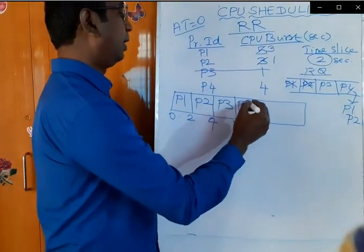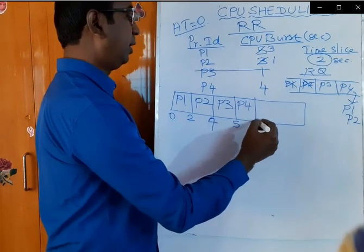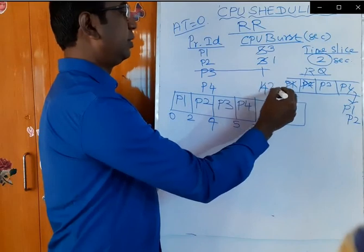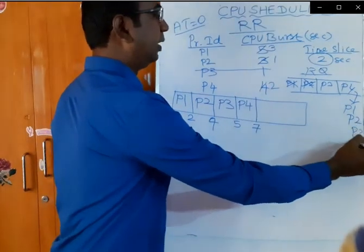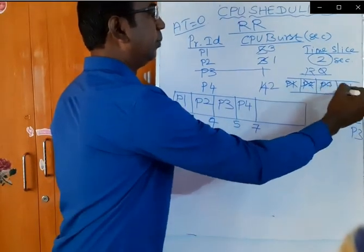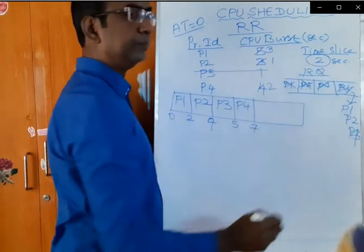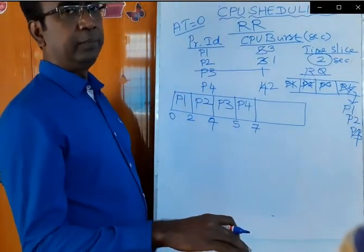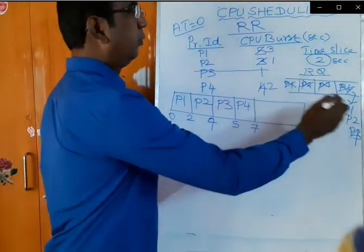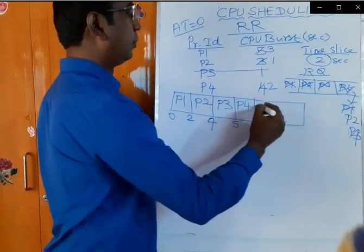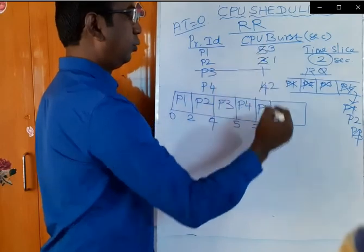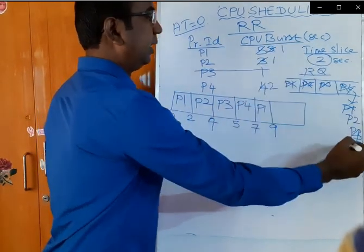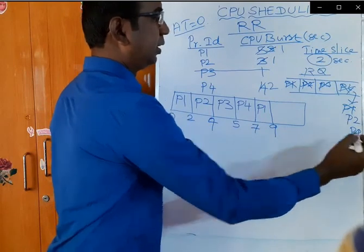Now P4 will enter into the CPU and execute for 2 seconds, reaching the 7th second. The remaining time for P4 is 2 seconds, so P4 will go to the end of the queue. Now the chance is given to P1 again. P1 will enter into the CPU, execute for 2 seconds, reaching the 9th second, with 1 second remaining. Then P1 will re-enter the queue.